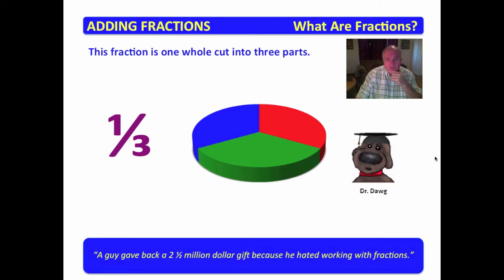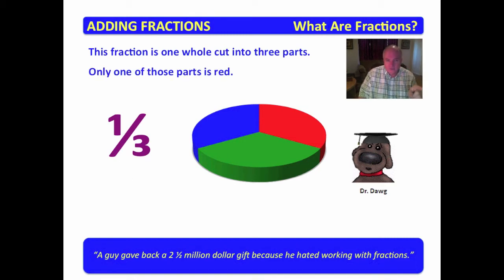Do you see that in this picture, the whole that we had is now cut into three parts? One, two, three — three parts. So we have three parts; this is how many it's cut into. Only one of those parts is red. So if we look at how much of this whole is red — if we cut it into three equal parts, then one of them is red. So one-third, or one over three — one-third of the whole is red. That's really not too bad, is it?